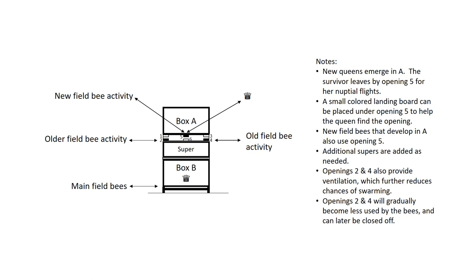New queens emerge in A. The survivor leaves by opening five for her nuptial flights. A small colored landing board can be placed under opening five to help the queen find the opening. New field bees that develop in A also use opening five. Additional supers are added as needed. Openings two and four also provide ventilation, which further reduces chances of swarming. Openings two and four will gradually become less used by the bees and can later be closed off.